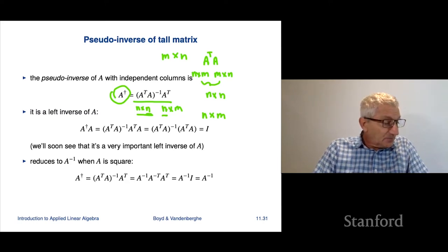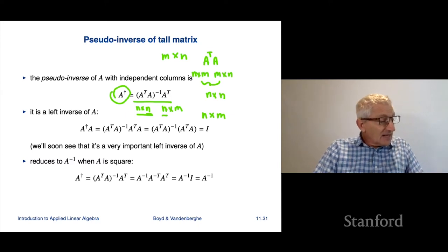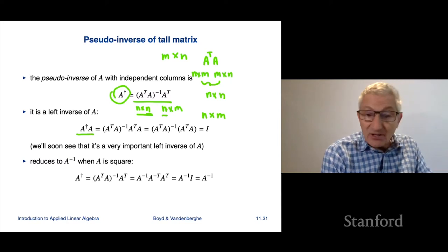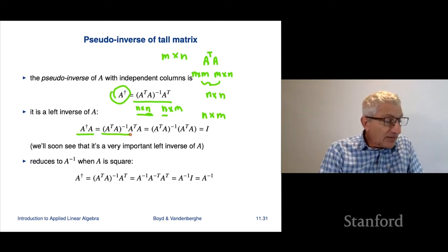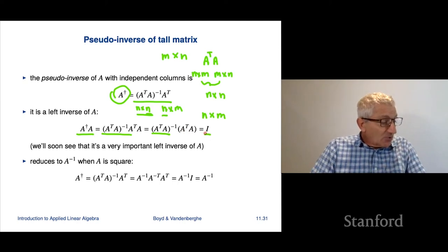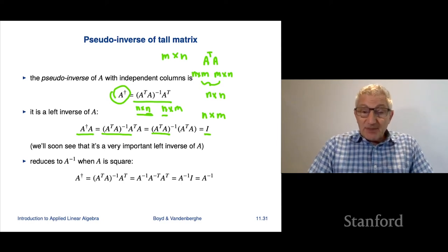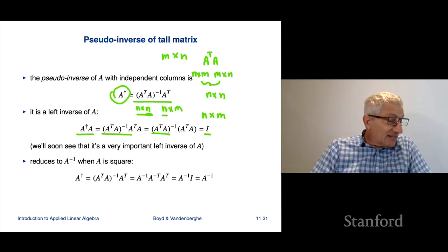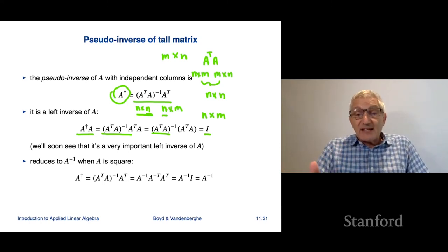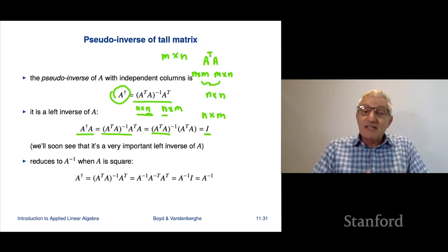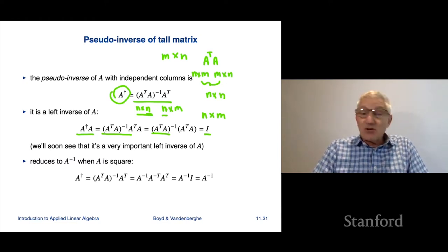A dagger is a left inverse of A. If I multiply A on the left by A dagger, I get (A transpose A) inverse times (A transpose A). Any matrix times its inverse is the identity. So we now have a left inverse. This also establishes something mentioned earlier: if a matrix has linearly independent columns, then it has a pseudo-inverse — specifically (A transpose A) inverse A transpose.